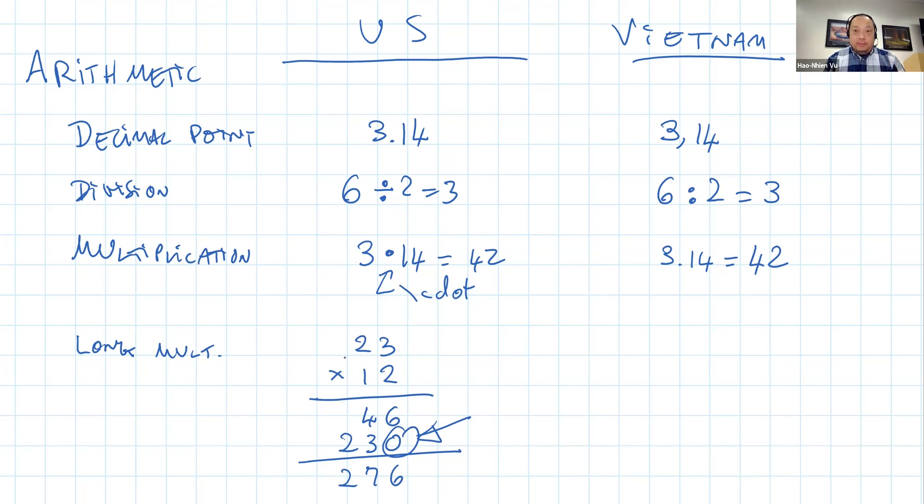In Vietnam, they don't do that. They just skip that zero. So 23 times 12 in Vietnam would still be 46 here, but this is just 23 with a blank. So they just shift in a position at a time.